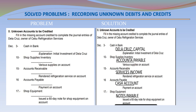December 15 – Accounts Receivable Debit, Service Income Credit – Rendered refrigeration services on account. December 16 – Accounts Payable Debit, Cash Account Credit – Payment on account. December 17 – Shop Equipment Debit, Notes Payable Credit – Issued a 60-day note for shop equipment on account.